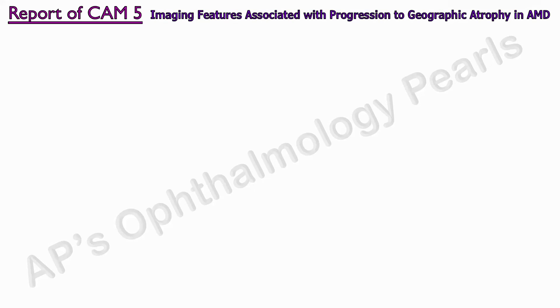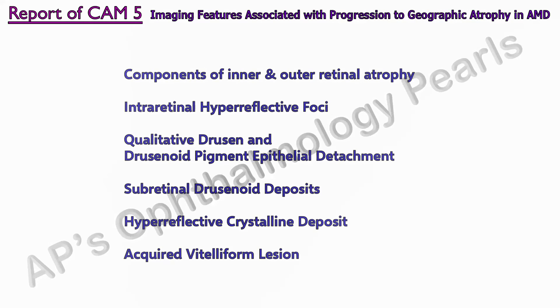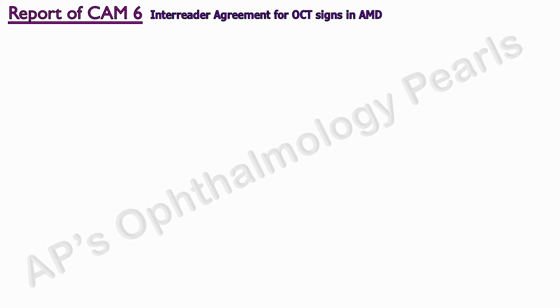The CAM 5 report focused on description of anatomic features associated with progression to geographic atrophy in eyes with non-neovascular AMD, the details of which are beyond the scope of this video. The 6th CAM report detailed the inter-reader agreement for each of the OCT signs in AMD.